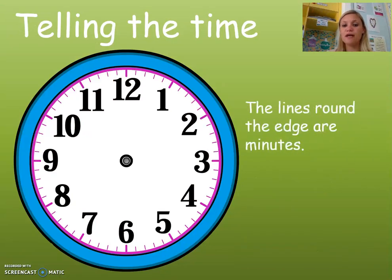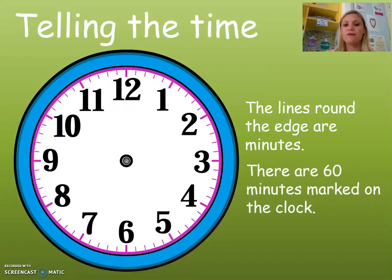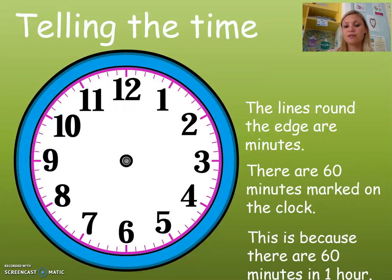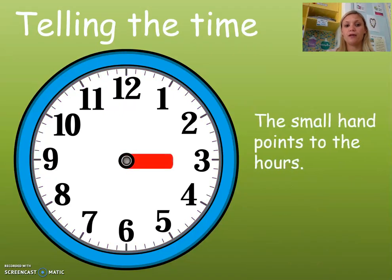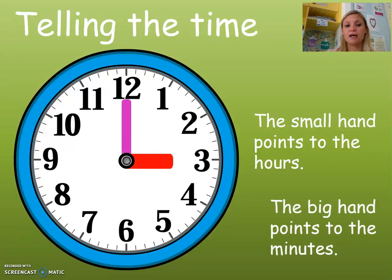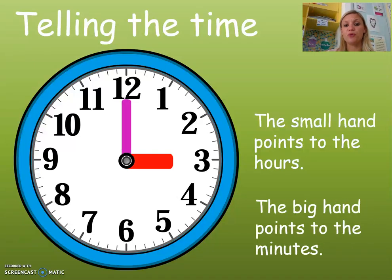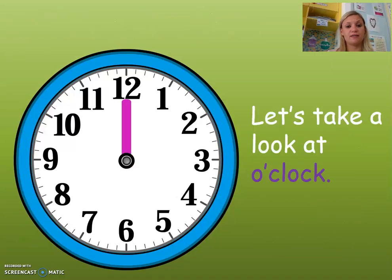The lines around the edge are the minutes. These are purple on this clock. There are 60 minutes marked on the clock, because there are 60 minutes in one hour. The small hand points to the hour and the big hand points to the minutes.